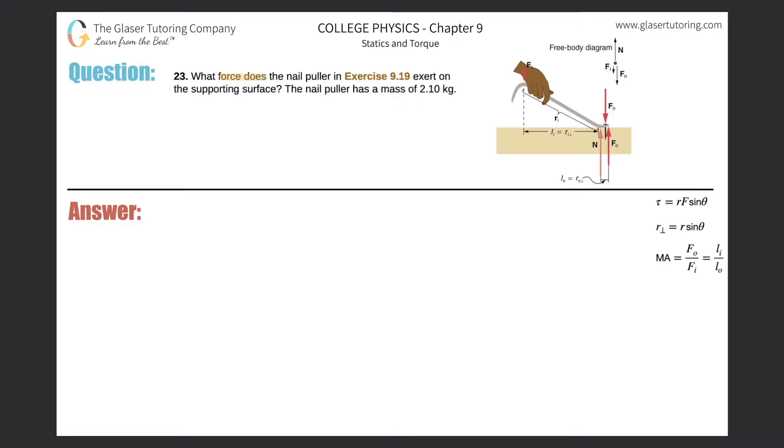Number 23: What force does the nail puller in exercise 9.19 exert on the supporting surface? The nail puller has a mass of 2.1 kilograms. You might have to reference number 19 in this chapter; however,